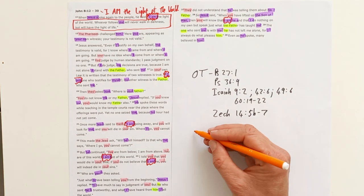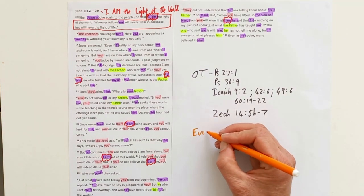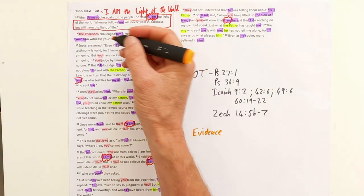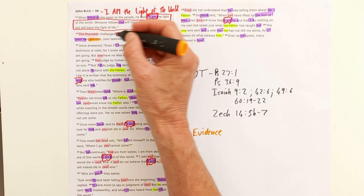As I said in John, we've got—we're looking for evidence. John gives us a whole lot of evidence about Jesus, and we see that in these words 'witness' in this section.